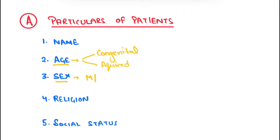There are certain diseases like thyroid diseases, movable kidneys, and cystitis which are more common in females, and diseases like lung carcinoma which are most common in males. So we can also classify diseases on the basis of sex.